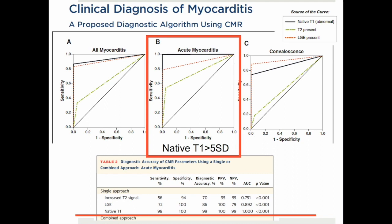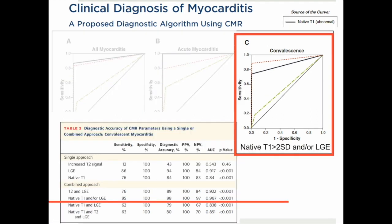These observations led us to propose a new diagnostic algorithm for clinical diagnosis of myocarditis, employing distinctively different algorithms for acute and chronic convalescent myocarditis. In prospective validation, native T1 of more than five standard deviations was able to virtually identify all cases of acute myocarditis, whereas chronic or convalescent myocarditis was best defined by a combination of abnormal native T1 and/or the presence of late gadolinium enhancement.